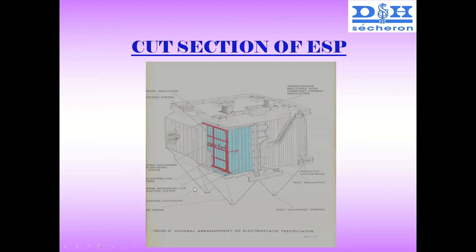Finally, whatever ash is stored is collected down below in hoppers. You will normally see 8, 12, or 24 silos depending on the capacity of the plant, because ESPs can be very big. All the hoppers collect ash from the top and feed it down below.